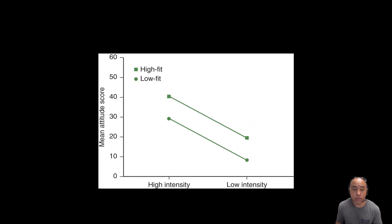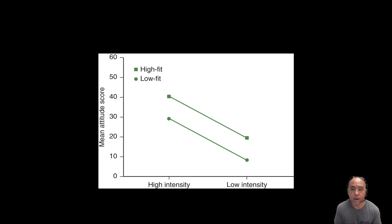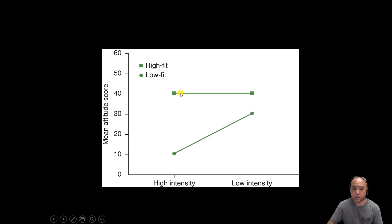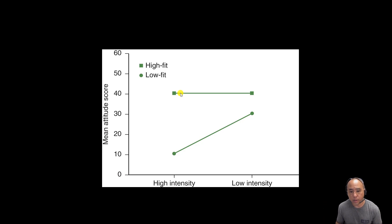If both groups responded the same way, the graph would show lines going in the same direction regardless of the fitness group — in that case, the interaction would not be significant. Another example of a significant interaction is one where only the low-fit group responds to exercise intensity, with their mean attitude score increasing from high to low, while the high-fit group remains constant. These are just plot lines, and we can only make sample-level interpretations. To extend results to the general population, we have to run an analysis of variance.